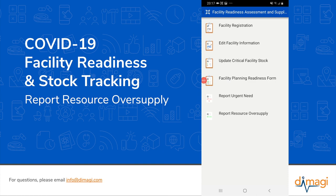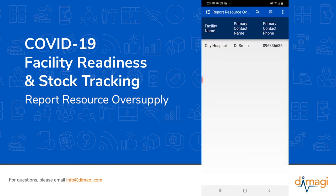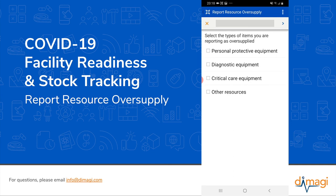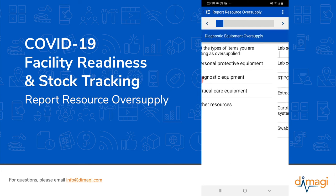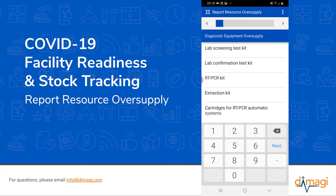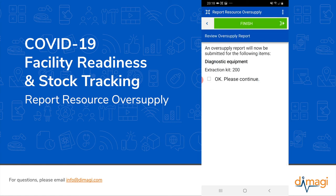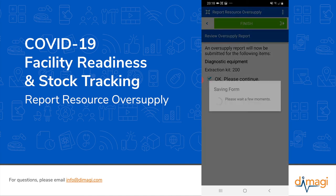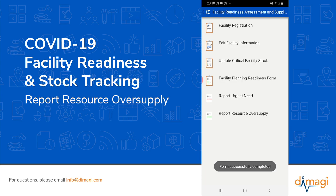In a very similar way, if while completing the critical facility stock it is noted that there is a large oversupply of a resource, the report resource oversupply form can be submitted. This works similarly to reporting an urgent need. In this case, we have an oversupply of diagnostic equipment — specifically, too many extraction kits. There is an oversupply of 200 kits that could be reallocated to another facility. We'll select OK, finish this form, and it will be submitted to the managing authority.